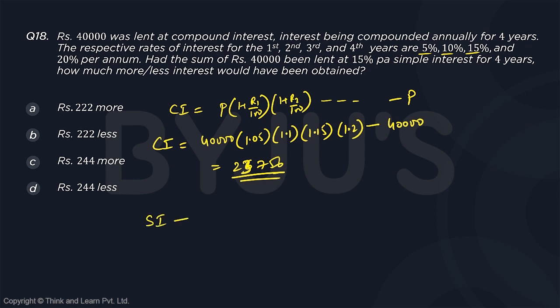If you are looking at SI, under simple interest, the interest value will be 40,000 principal times 4 years times 15 by 100. This value 200 goes away, so this is 15, 4s are 60, so 400 into 600.